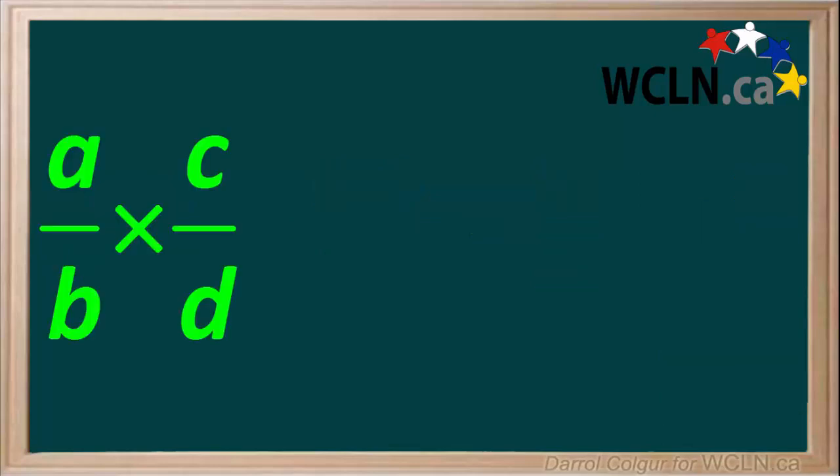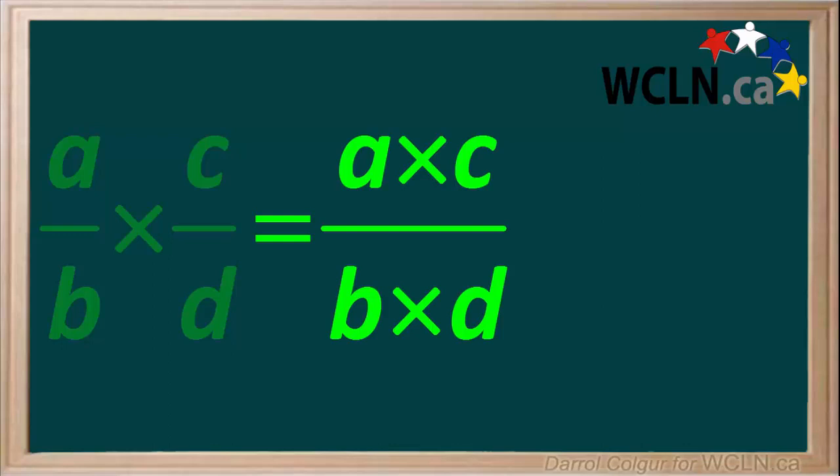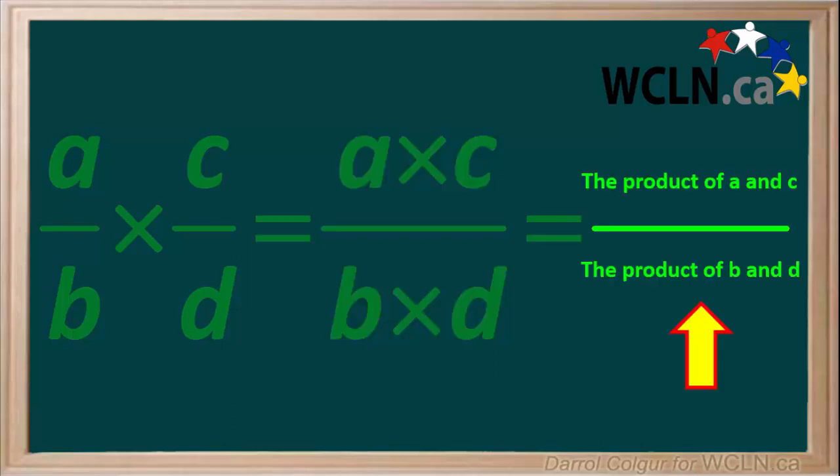To review, if we need to multiply one fraction by another fraction, like a over b times c over d, we multiply the numbers in the numerators, a and c, and the numbers in the denominators, b and d, to give us the fraction whose numerator is the product of a and c, and whose denominator is the product of b and d. If this is an improper fraction, it is useful to convert it to a mixed number.